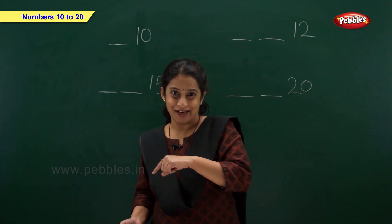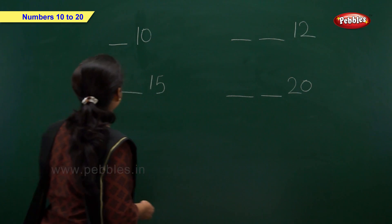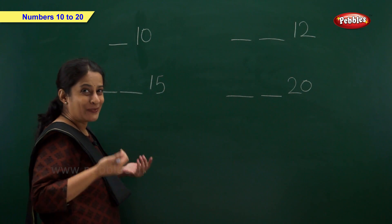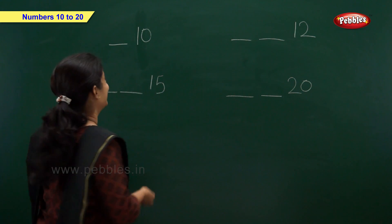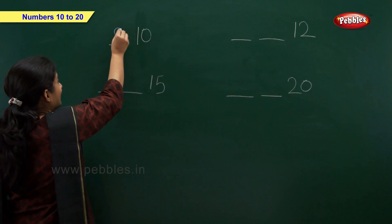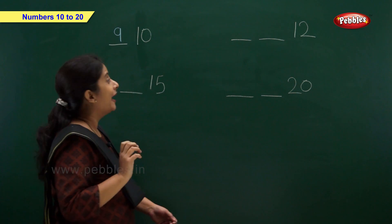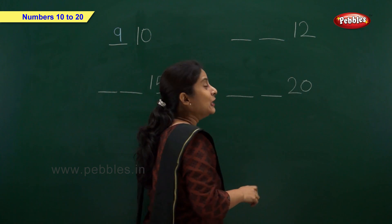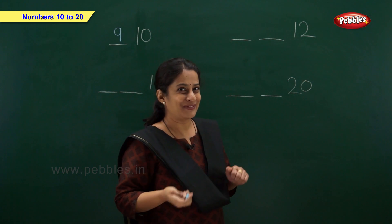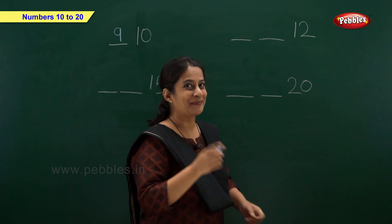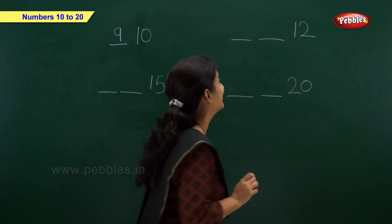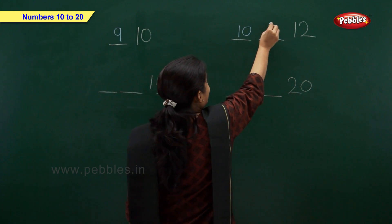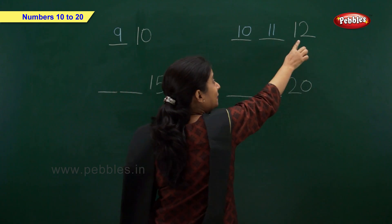Let us solve these examples — what comes before? We have number 10, so which number comes before 10? Write number 9. And now we have number 12 — so which 2 numbers come before 12? Tell me fast. Write number 10, number 11, and 12.